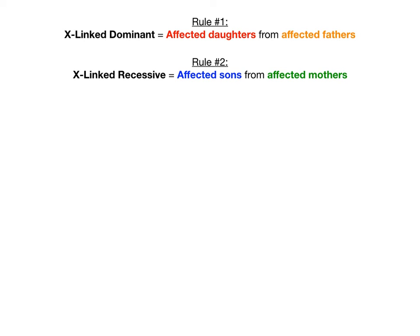Here are our two rules — this is all you need to know to get X-linked pedigrees right. Rule number one: all affected fathers will give the disease to their affected daughters if it's X-linked dominant. Rule number two: all affected mothers will give the disease to their affected sons if it's X-linked recessive. If you memorize these two rules, anytime you see a pedigree, just apply them to determine which one it is.